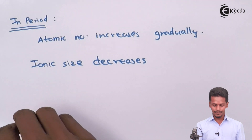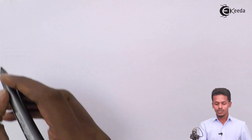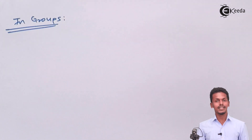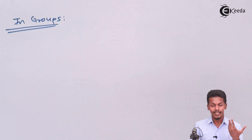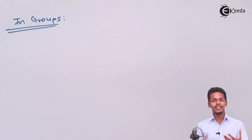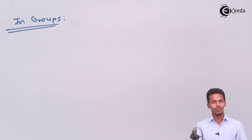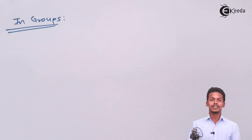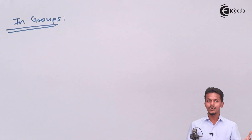Similarly, when talking about a group — the ionic size in a group again behaves similarly to the atomic size. As the number of electrons goes on increasing, as electrons are added when we go from top to bottom in a group, the number of shells also goes on increasing. When talking about a cation, it shows similar behavior to the atomic trend observed earlier — the ionic size goes on increasing down the group.